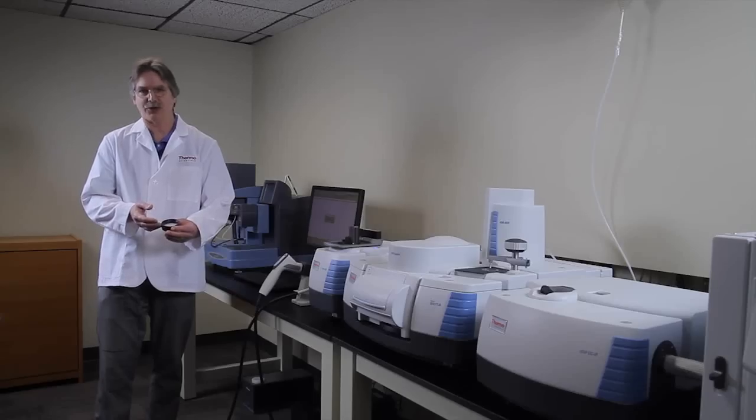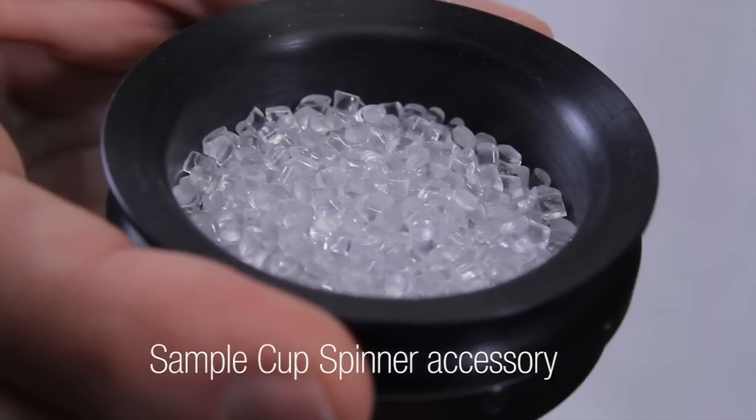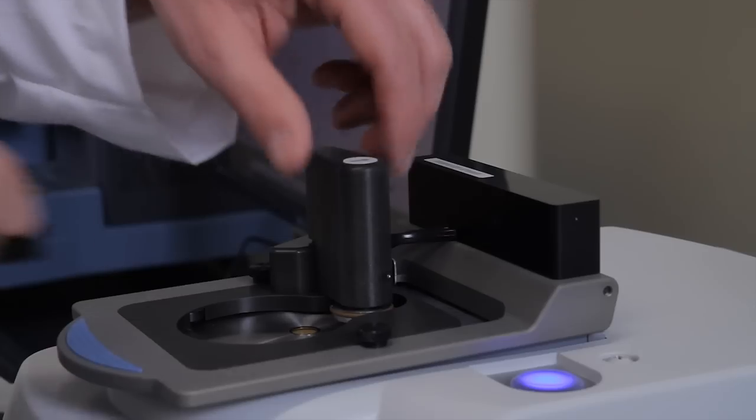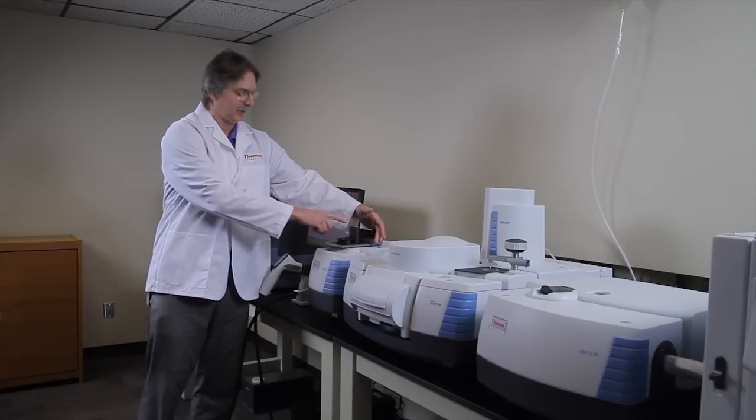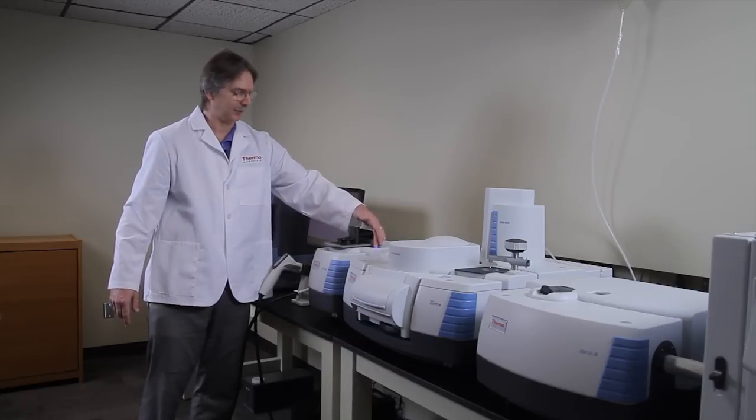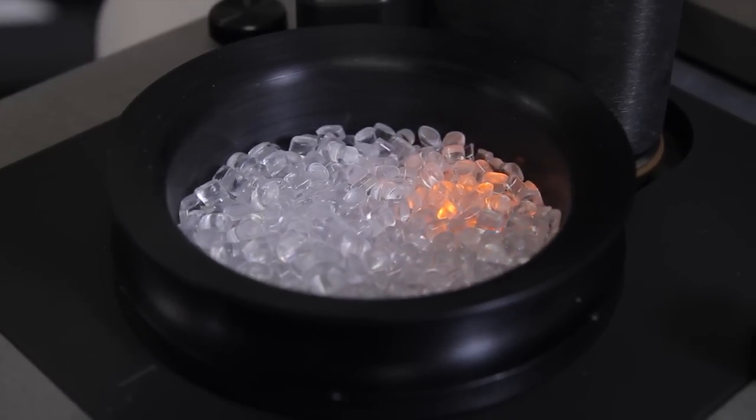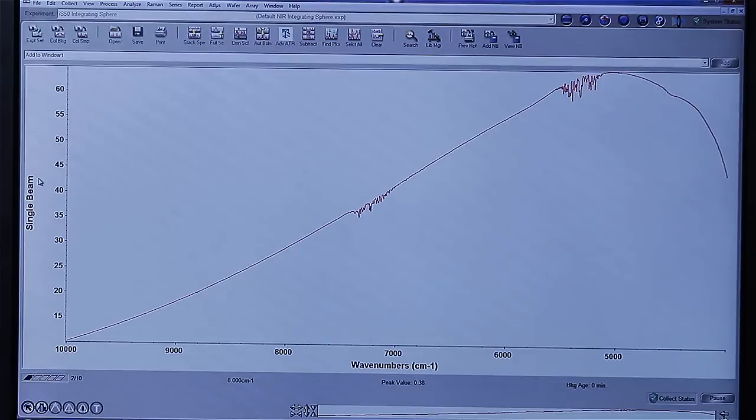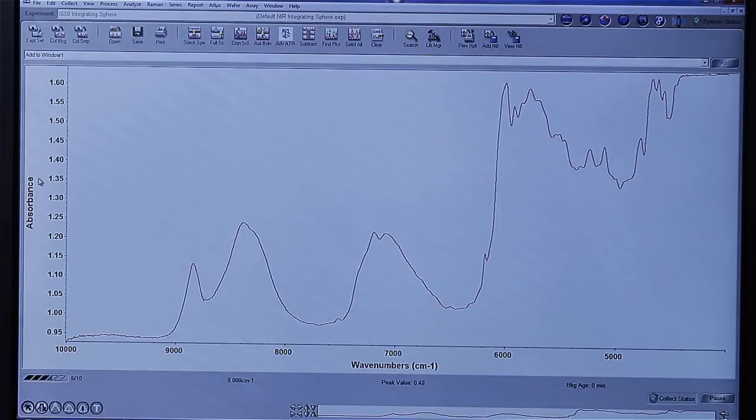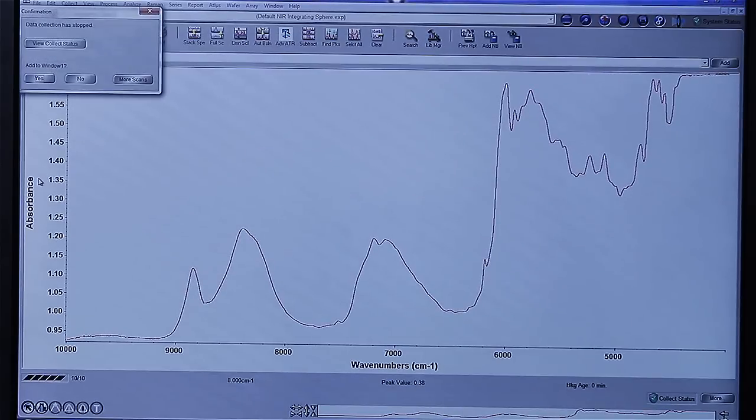Once the background spectrum is collected, we can just put our sample on the integrating sphere. And right now, I have some polymer pellets that we'll put onto the integrating sphere. We push the button again. The sample cup spinner will spin, allowing you to collect more uniform data. And then when the analysis is done, the spectrum shows up on the screen.